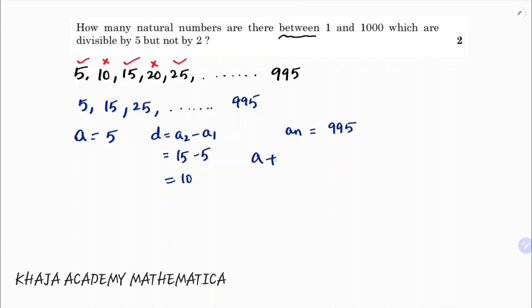So, an formula is a plus n minus 1 into d equals 995. a is 5 plus n minus 1 into 10 equals 995. So 5 plus 10n minus 10 equals 995.